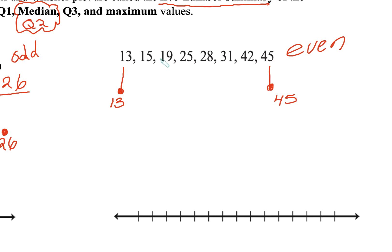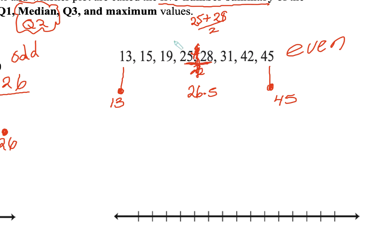Because it's even, there are 8 of them. The middle value would be your 4th and 5th value. We're going to add these 2 values and divide by 2, so our middle value will be 26.5. Our median is in the middle right here — we added 25 with 28 and divided by 2. Our median is 26.5, which means this is my lower half from 13 to 25.